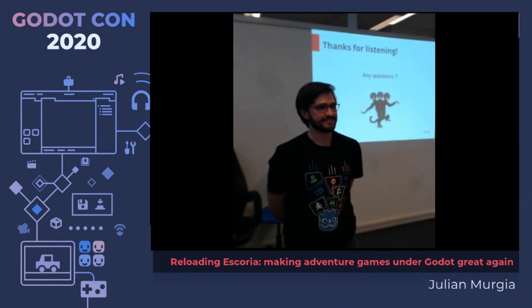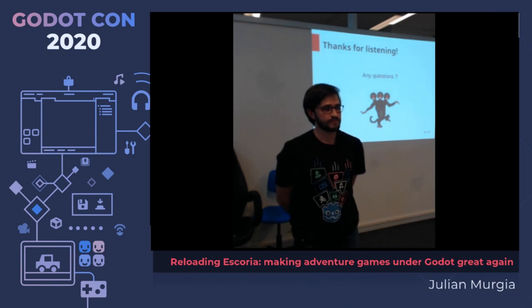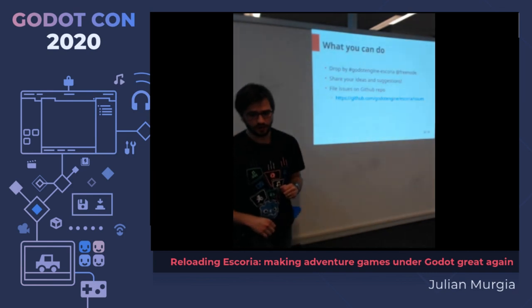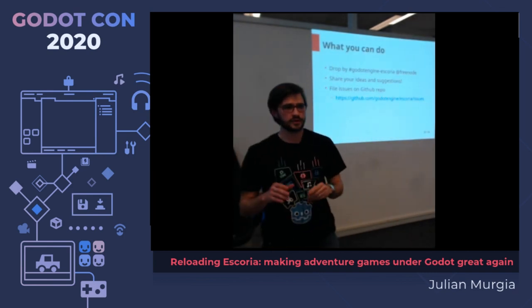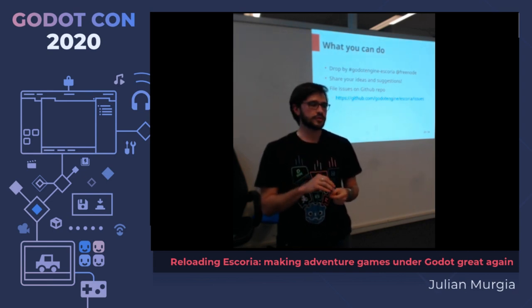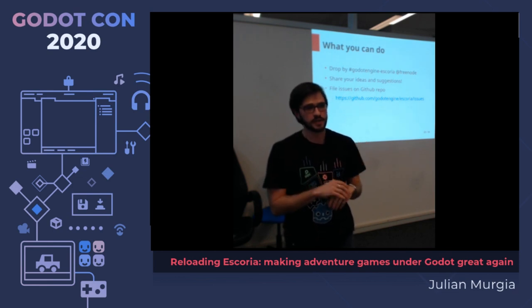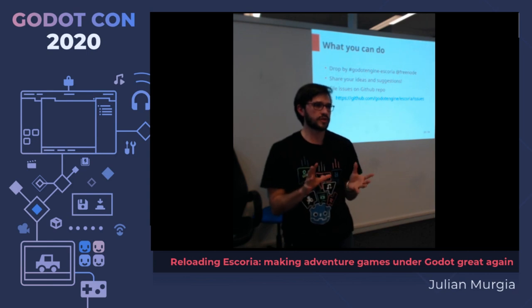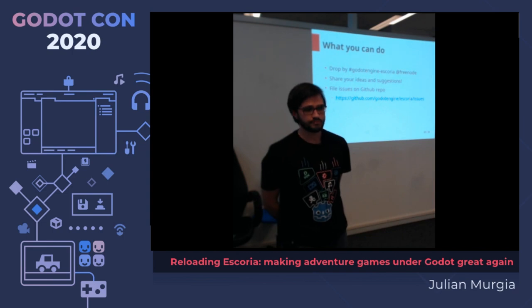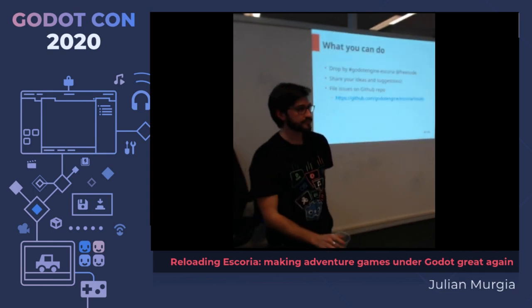Follow-up question: is Escoria script documented somewhere other than the Floss manual — is it documented in the repo? Yes — go to the repository and look through the source code; you'll find a docs folder where everything has been documented. I'd like to remake it, but since I don't want the Escoria language to change much, I won't change the documentation a lot during refactoring. It should not evolve much, so you can look at it right now.